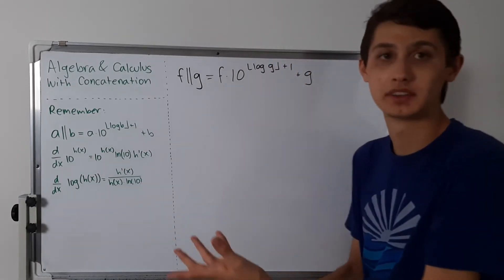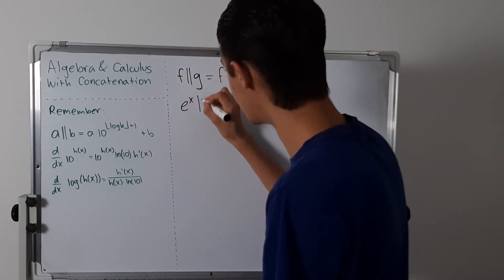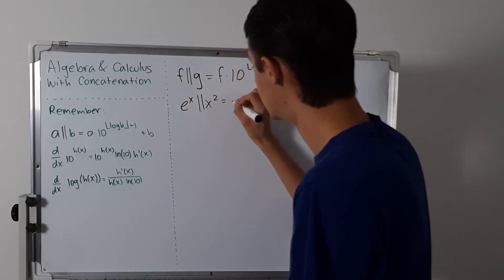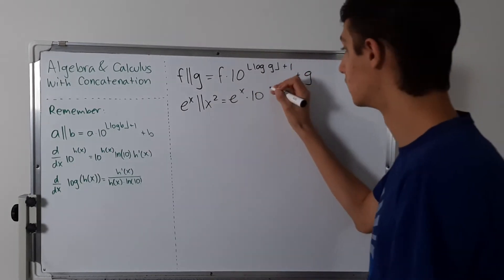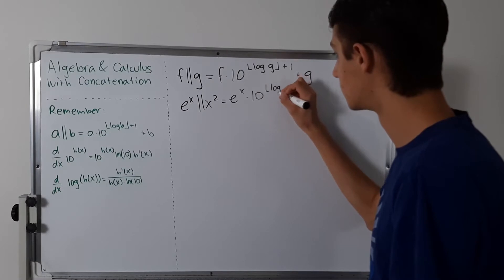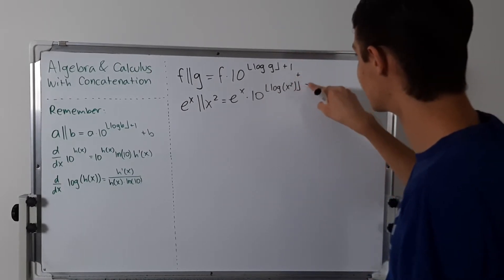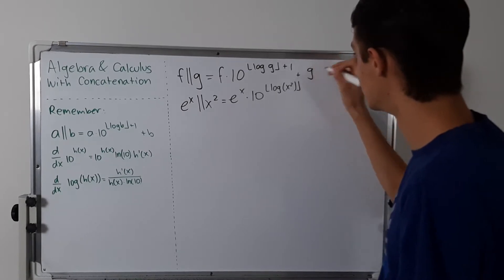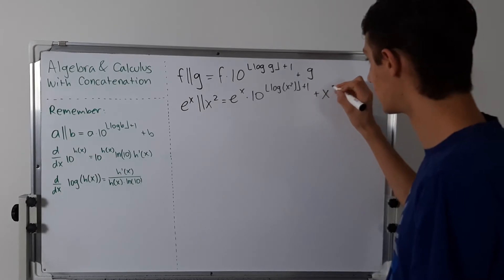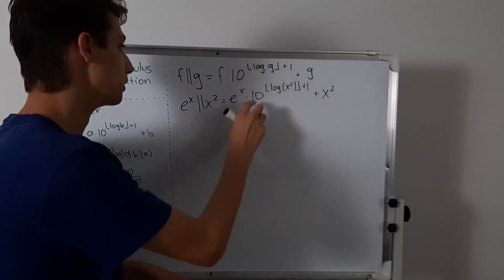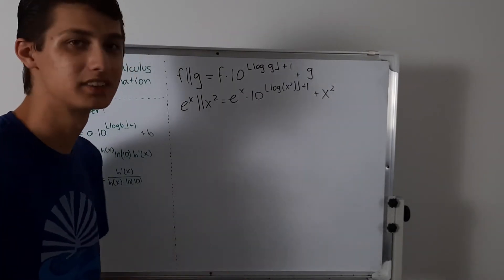Let's do an example. If we do e to the x concatenated with x squared, this is going to give us e to the x times 10 to the floor of log of x squared, plus 1, plus x squared. Here we can use log properties and move the 2 to the front, but it's not totally necessary. So this is just some example.